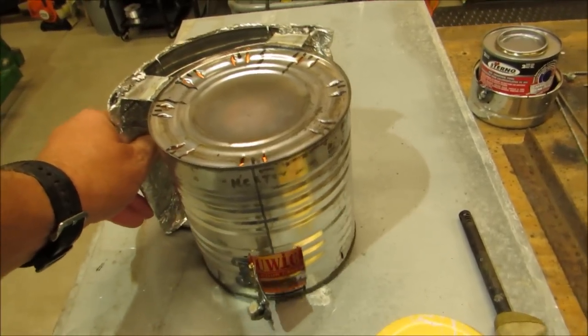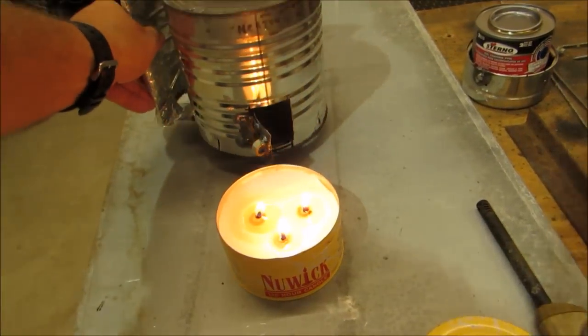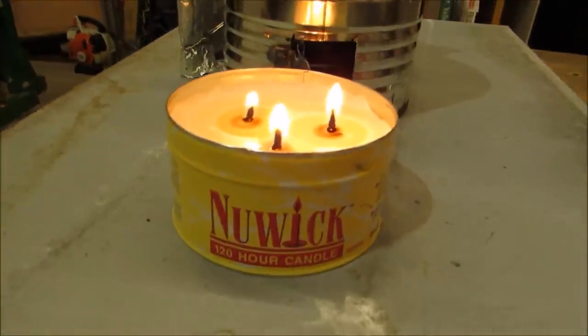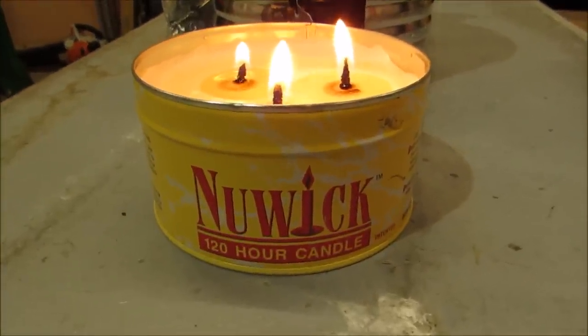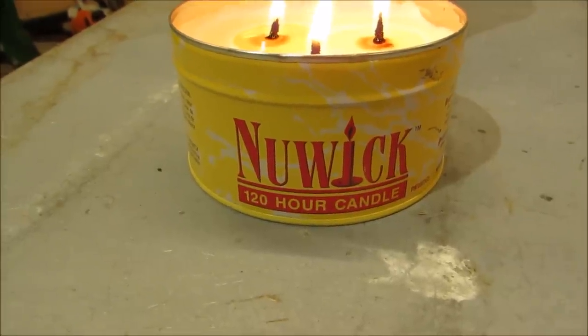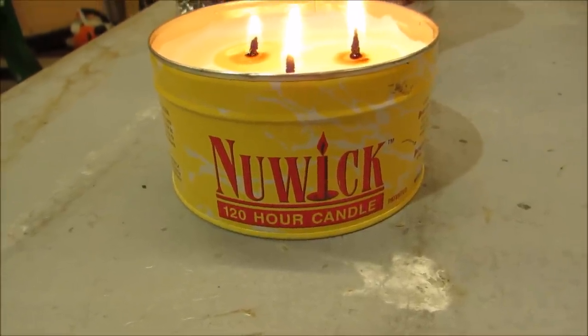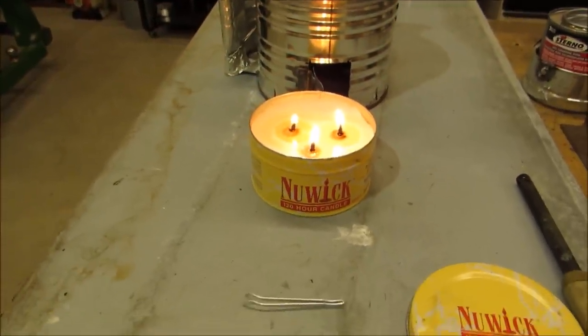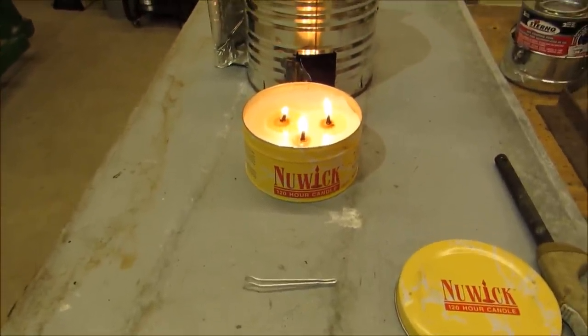This is what it is. I want to take the top off of it. This is a New Wick 120-hour candle. A bunch of other people make them, sure. It's called 120-hour candle, New Wick. It's made for cooking, camping, survival situations, all that kind of stuff.